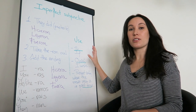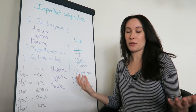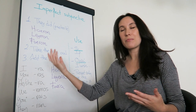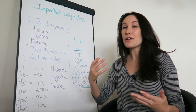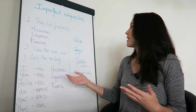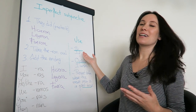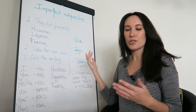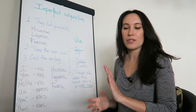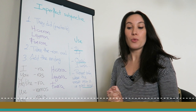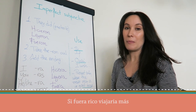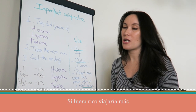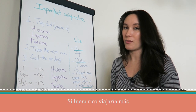One very typical structure for imperfect subjunctive is 'if something happened' — if this was this way. 'Si' is 'if' in Spanish. An example of this could be: 'si fuera rico viajaría más' — if I were rich I would travel more.